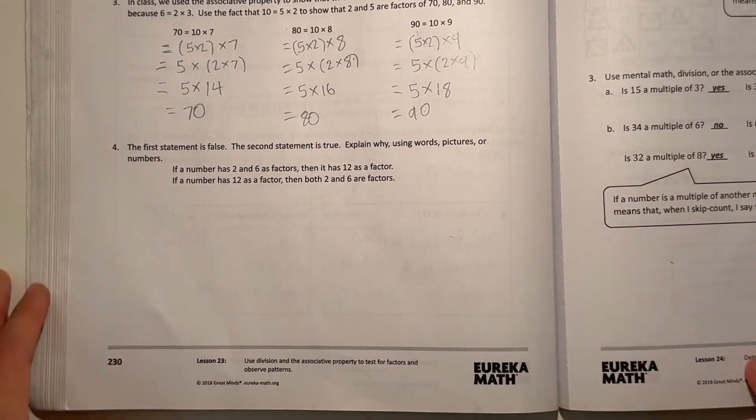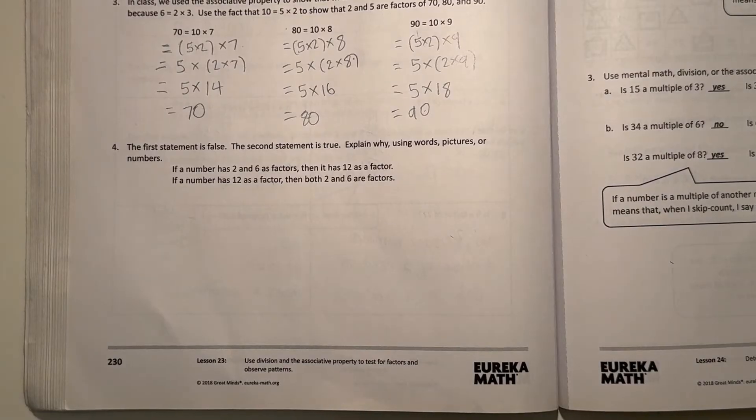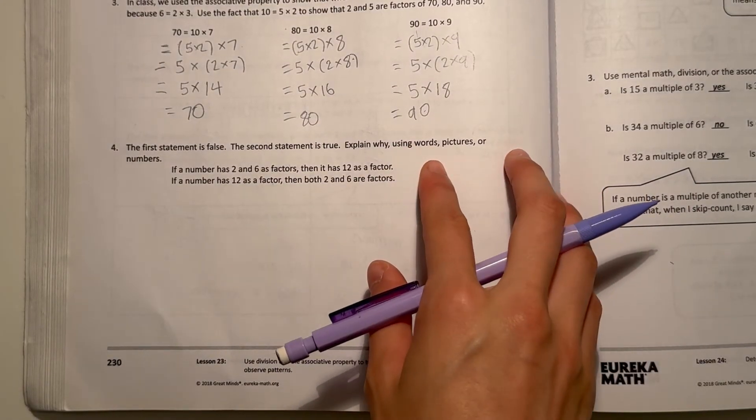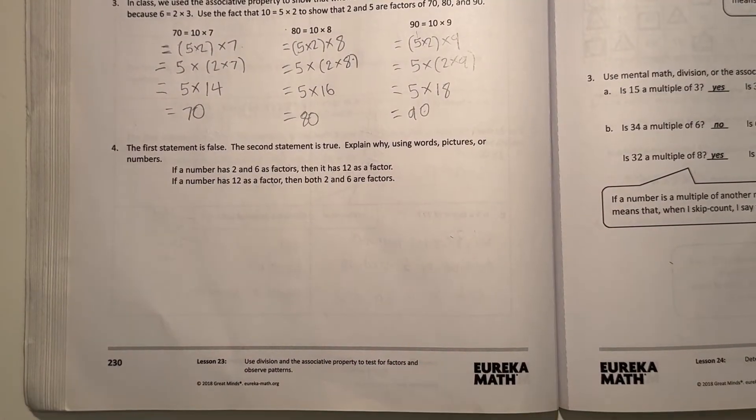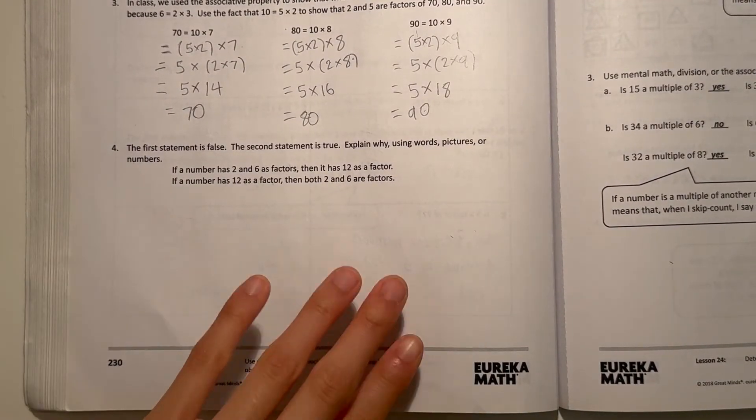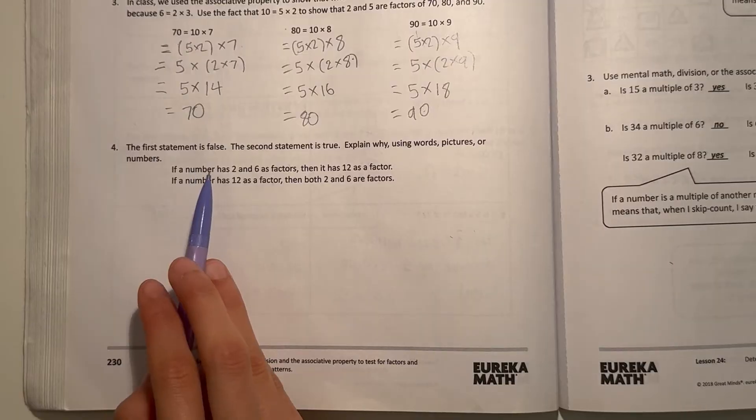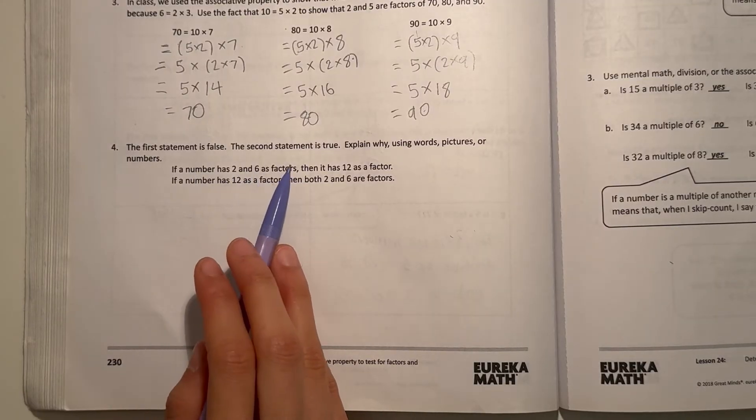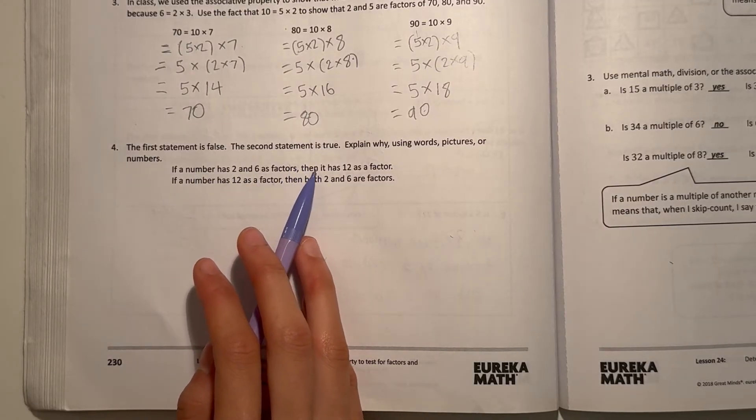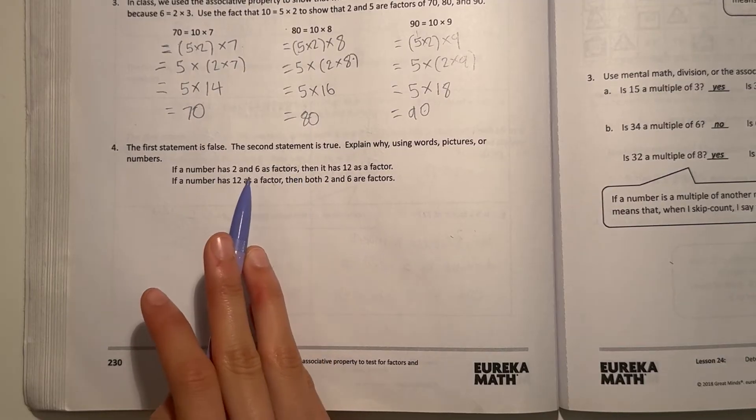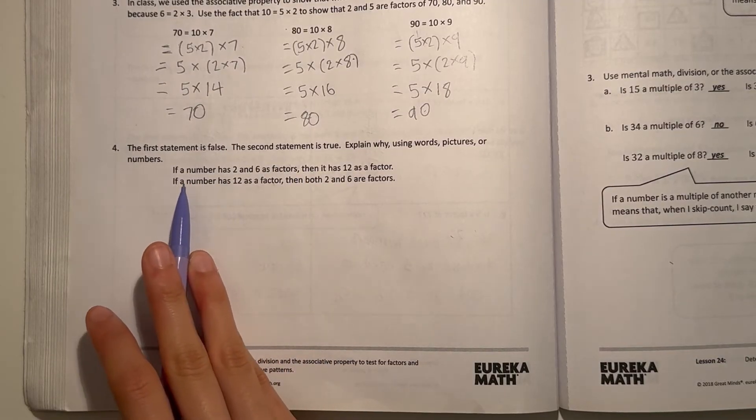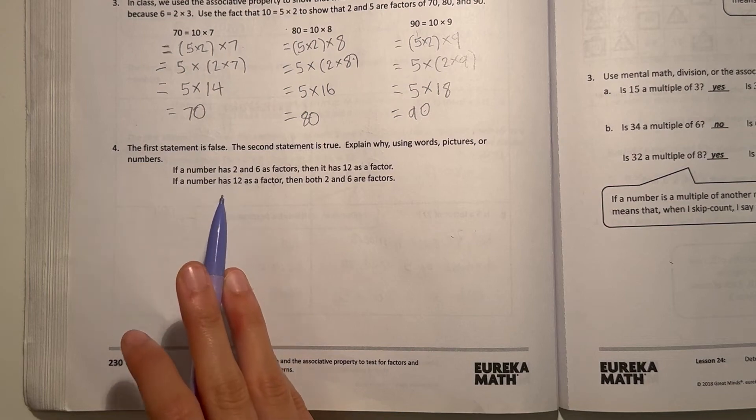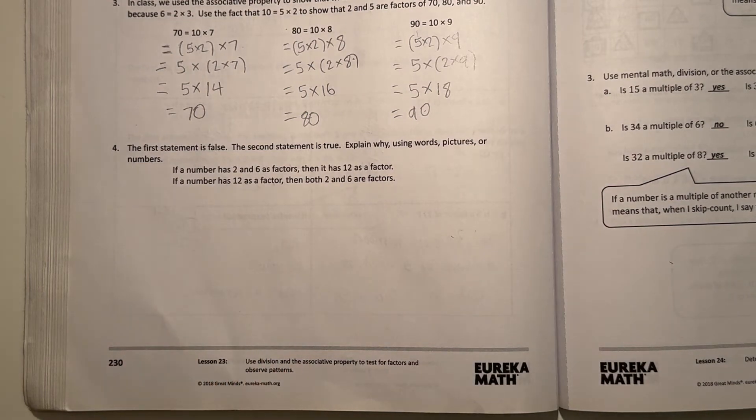Number 4 says, The first statement is false. The second statement is true. Explain why using words, pictures, or numbers. So it says, The first statement, this one is false. If a number has 2 and 6 as factors, then it has 12 as a factor. So that's false. But this one is true. If a number has 12 as a factor, then both 2 and 6 are factors.